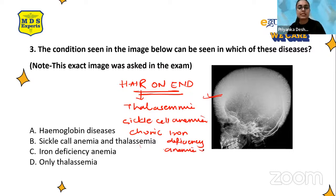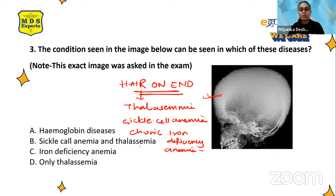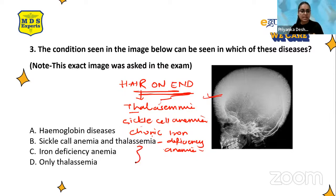The hair-on-end appearance occurs due to widening of diploë spaces in the skull, caused by hyperplasia of red bone marrow. This hyperplasia occurs due to altered metabolism in the bone resulting from an anemic condition. You will see vertical striations that appear like hair on end. Among the options, all three — sickle cell anemia and thalassemia, iron deficiency anemia, and only thalassemia — are correct, but the most correct answer is option B: sickle cell anemia and thalassemia.